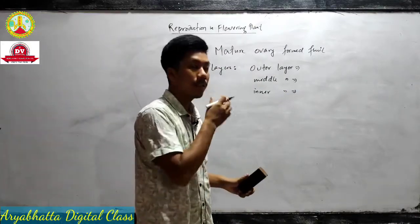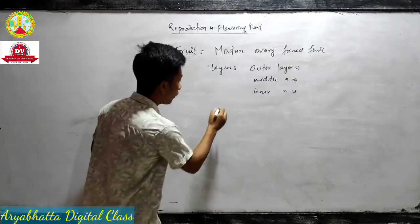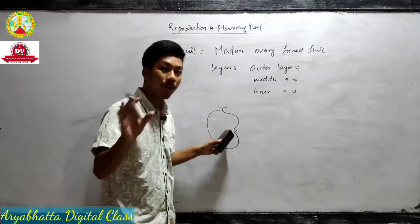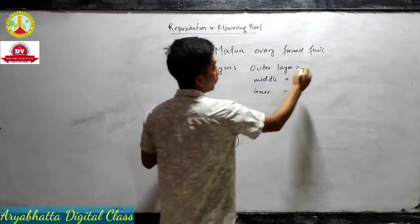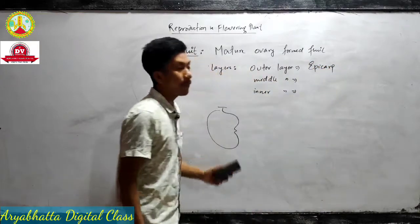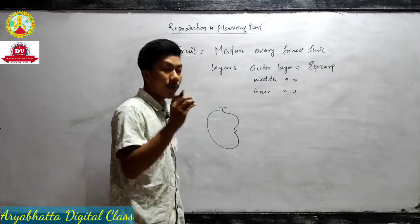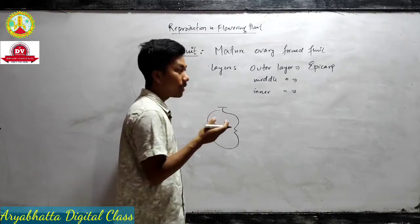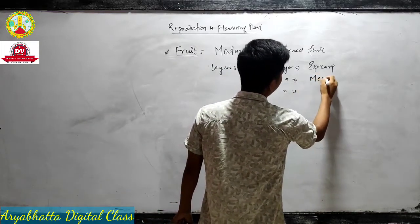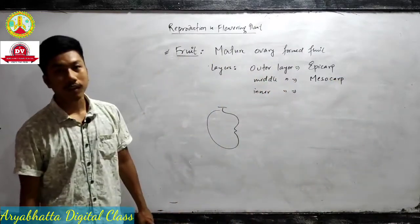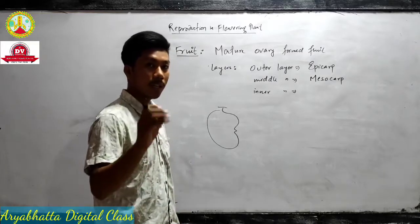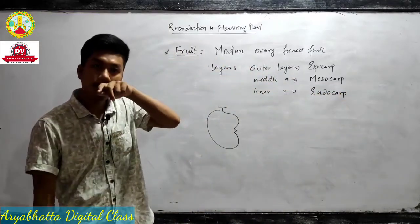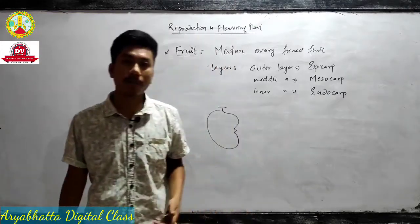Let's take the example of mango. The outer layer of the mango — the skin that we peel off and do not consume — is known as epicarp. Epi means above. What we consume in case of mango is the middle layer, which we call the mesocarp — meso means middle. The inner layer of the fruit is known as endocarp.